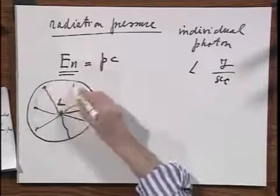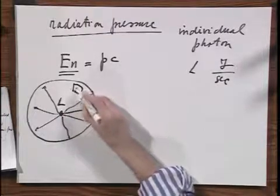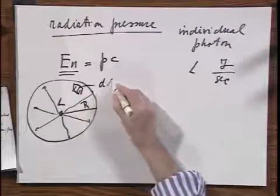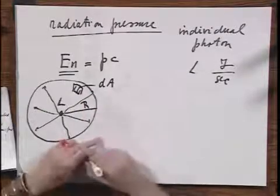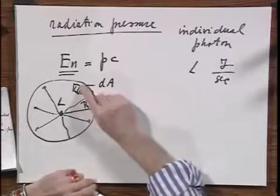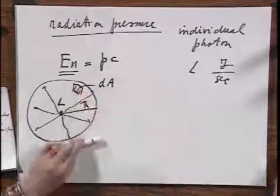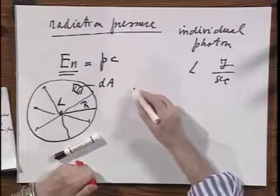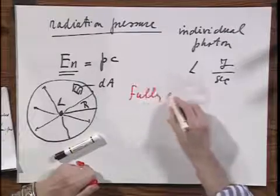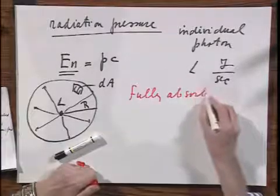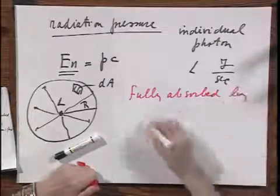And at a distance r, which is a sphere, there is here a little element dA. And these individual photons hit this little element dA. They are, in what follows, fully absorbed by that element dA.